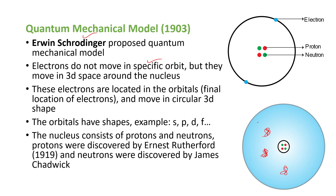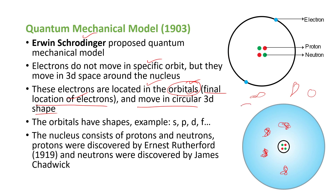Depending upon the movement of electrons, we get shapes of orbitals — dumbbell, double dumbbell, circular, and so on. An orbital is a three-dimensional space where the probability of finding electrons is maximum. Orbitals are the final locations of the electrons, and they move in 3D shapes. The orbitals are labeled as S, P, D, F, and so on.